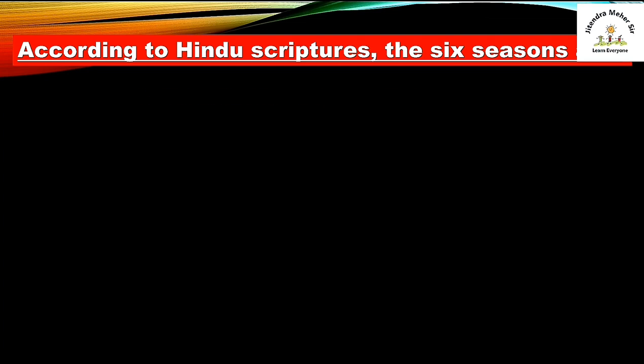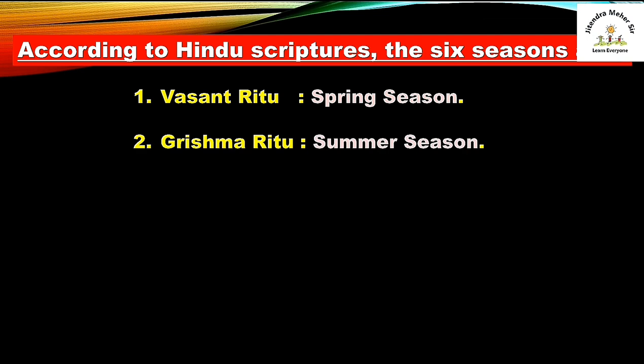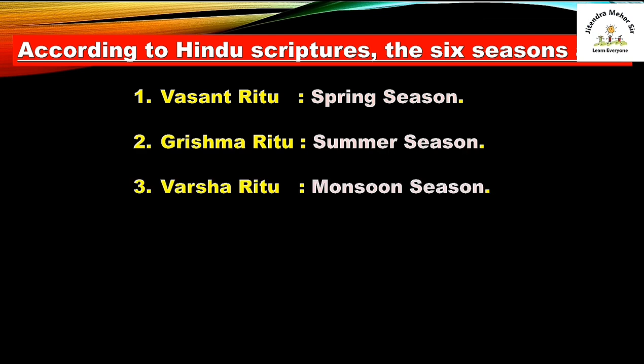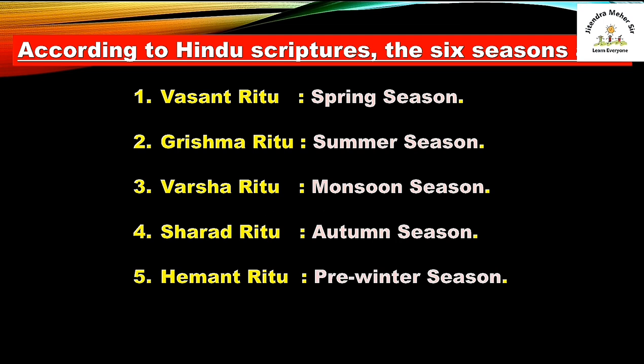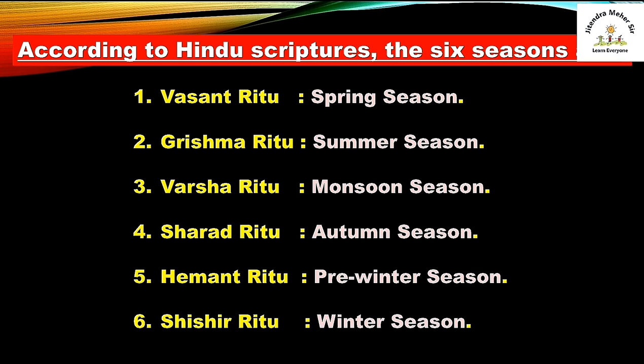The six seasons according to Hindu scripture are: first, Vasanta Rutu — spring season; second, Grishma Rutu — summer season; third, Varsha Rutu — monsoon season; fourth, Shara Rutu — autumn season; fifth, Hemant Rutu — pre-winter season; and last, Shishira Rutu — winter season. So we have to learn about Shara Rutu, the Indian autumn season.